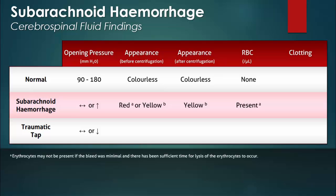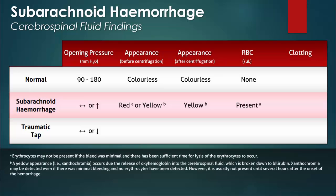Erythrocytes may not be present if the bleed was minimal and there has been sufficient time for lysis to occur. Xanthochromia, on the other hand, can be detected by spectrophotometry even if the bleed was minimal and no erythrocytes have been detected.